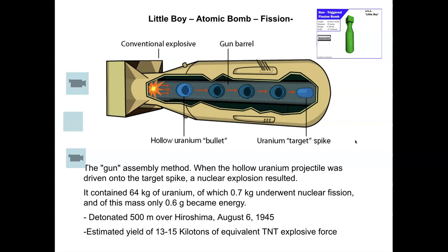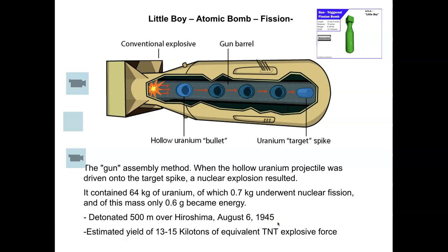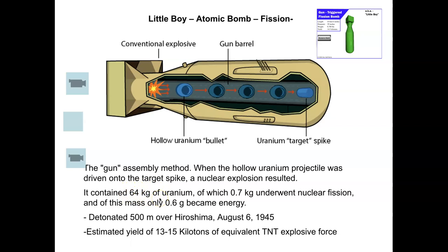By today's standards it was a relatively small bomb, but the destruction it unleashed is still being felt generations later. This single primitive bomb equaled or exceeded all the TNT explosive force dropped in all of World War II — every bombing run, every explosion, every grenade from the entire war combined did not equal the force of this single bomb. And incredibly, only 0.7 kilograms of the 64 kilograms of uranium actually underwent nuclear fission.